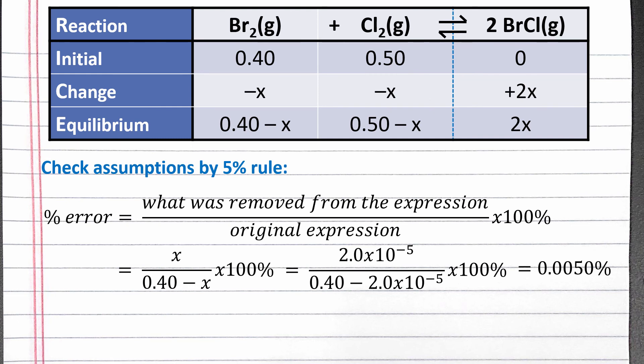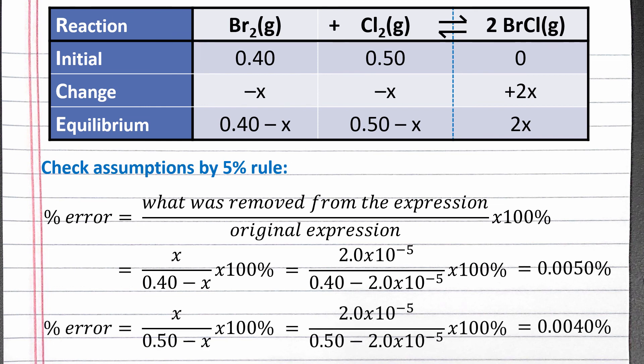We can check the second assumption in a similar manner. We assumed 0.50 minus x is equal to 0.50, so we removed x from the second expression also. x goes in the numerator again, and 0.50 minus x goes in the denominator. This simplifying assumption has an error of 0.0040 percent, which is also far below 5%. This assumption is also valid.